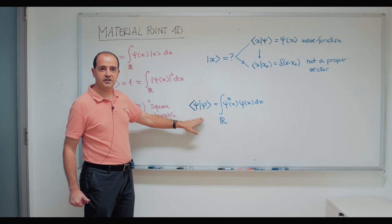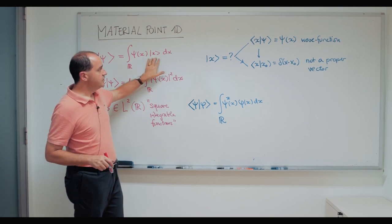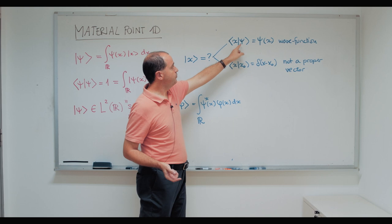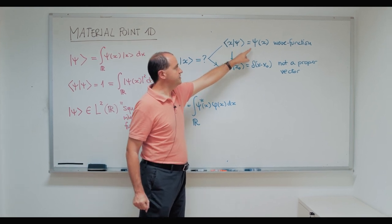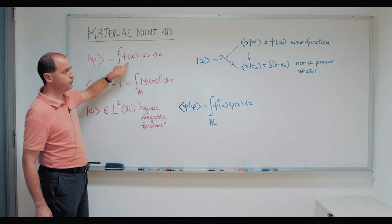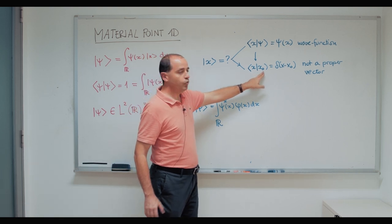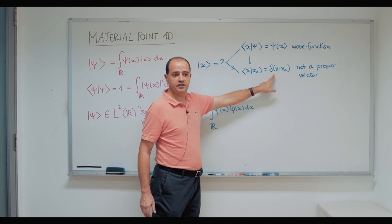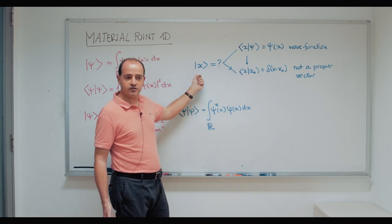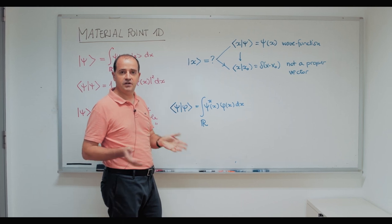There is an object I've introduced here that I have to discuss, which is this |x⟩ — a kind of basis in which we decompose the state. It behaves most of the time very well. For instance, the projection of |ψ⟩ on that object is actually the wave function, as you would expect. However, if you apply the same rule to that vector itself, you would find that the wave function is a delta function. A delta function is not square integrable — the integral of its square is infinity. Therefore, strictly speaking, these |x⟩ objects are not proper vectors. However, they are useful in the notation and the mathematics, and we are going to use them.